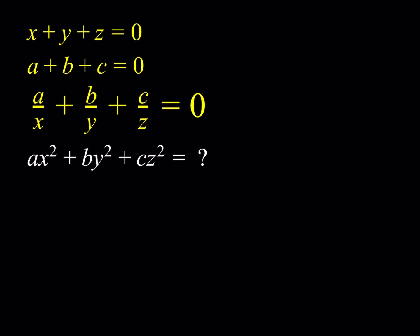We are given that x plus y plus z is equal to 0, a plus b plus c is equal to 0, and a over x plus b over y plus c over z is equal to 0. And we're supposed to evaluate ax squared plus by squared plus cz squared.